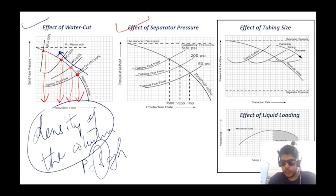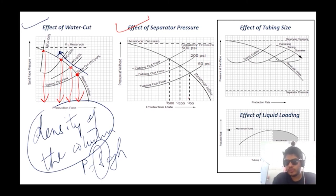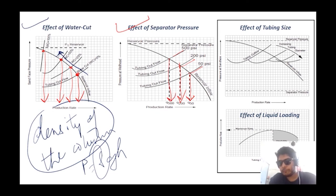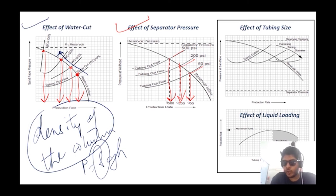Effect of separator pressure: as more back pressure is applied to the well — at 50 psi, 200 psi, 500 psi — the TPR shifts upward and the flow rate is progressively reduced. We need an optimum separator pressure point. Effect of tubing size: as the tubing diameter increases, TPR shifts downward and production rate increases, but after a certain point there is a reversal due to liquid loading.